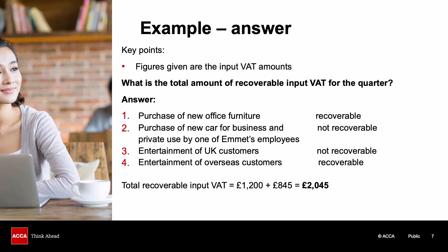It's important to note that the figures given in the question are actually input VAT amounts — we don't have to work out the tax ourselves. The purchase of the new office furniture: the input tax on that will be recoverable. The purchase of the new car for business and private use by an employee: the input tax is not recoverable, because it is the purchase of a car and it is not being used 100% for business purposes. The entertainment of UK customers: the input tax on that is not recoverable. But the entertainment of overseas customers: that is recoverable. Therefore, the total amount of recoverable input VAT for the quarter is £1,200 for the furniture plus £840 for the overseas customer entertainment, giving a total of £2,045.